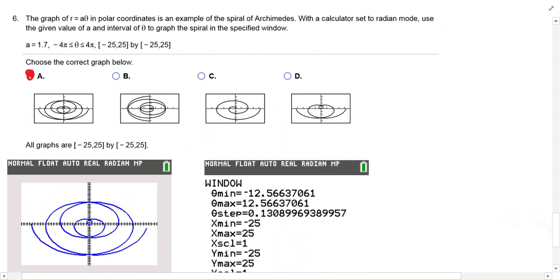So I think number six should be the last one. So we have this one and it says, with a calculator set to radian mode, use the given value of a and interval of theta to graph this. So make sure that you're in radian mode for this one. We're doing a spiral of Archimedes. It's a cool one. And then just go and set your information in. So you're given a value of 1.7 for a. And that theta falls between negative 4 pi and 4 pi.